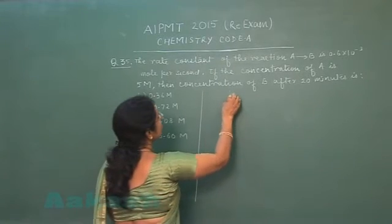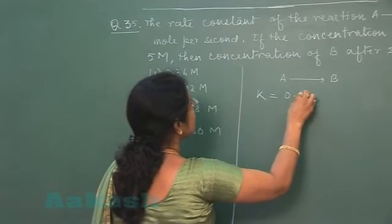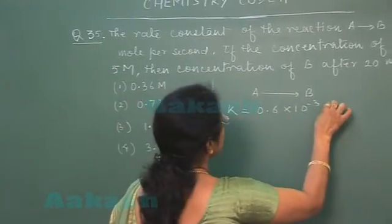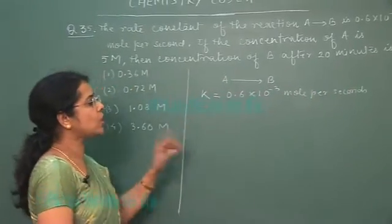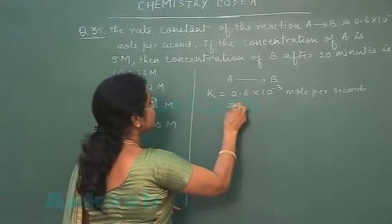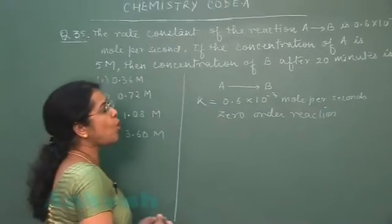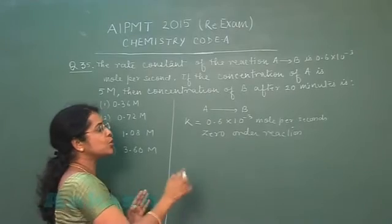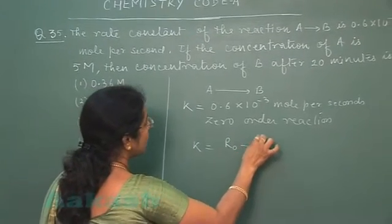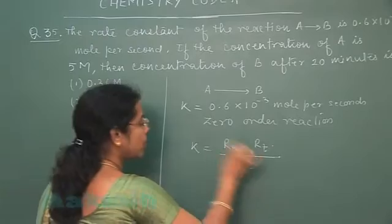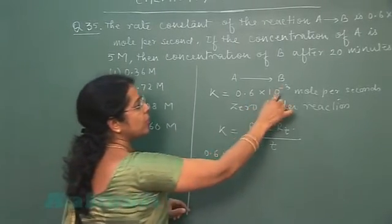Now see in this question A is converted into B. Rate constant is given 0.6 into 10 raise to power minus 3 mole per seconds. The unit of rate constants suggests that this is a 0 order reaction. 0 order reaction, it means amount of A reacted should be equal to amount of B produced.